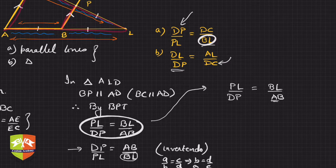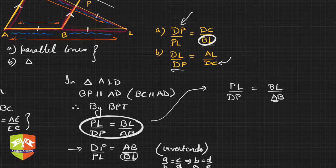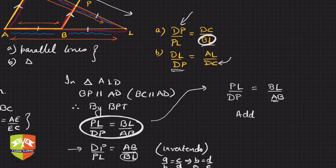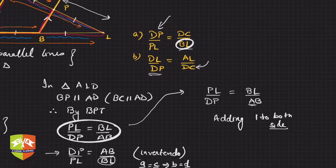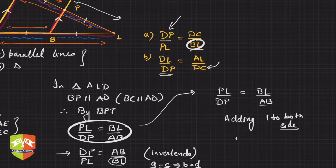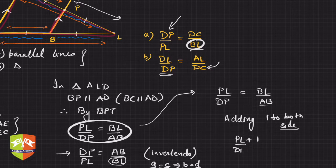DL equals DP plus PL, so we need to introduce DL. The trick is to add 1 to both sides. Adding one is an important step in many such questions because it gives you different ratios. So: PL upon DP plus 1 equals BL upon AB plus 1.